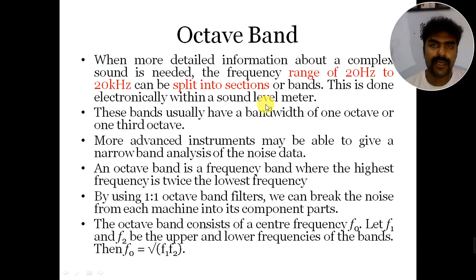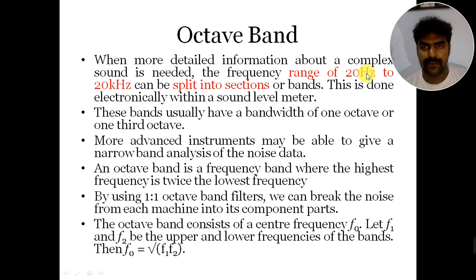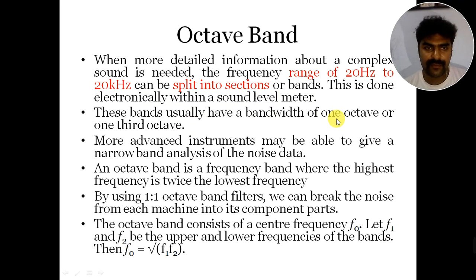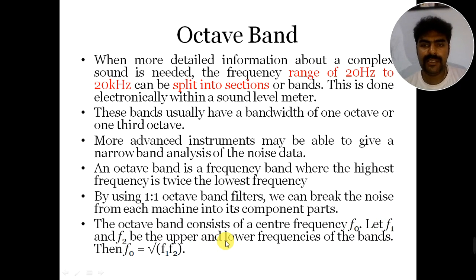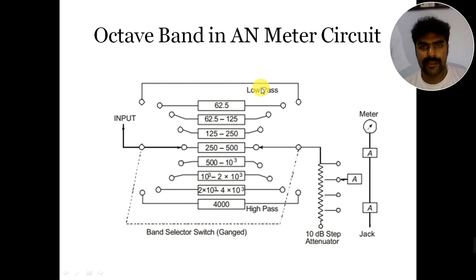The octave band filter is another component of the measurement circuit. Whenever more complex information is needed, the frequency range from 20 Hz to 20 kHz can be split into several sections or bands. This is done with an electronic circuit within a sound level meter. These bands have a bandwidth of one octave or one-third octave. An octave band is a frequency band where the highest frequency is twice the lowest frequency. The octave band consists of a center frequency F0, where F0 = √(F1 × F2), with F1 and F2 being the upper and lower frequencies of the band.